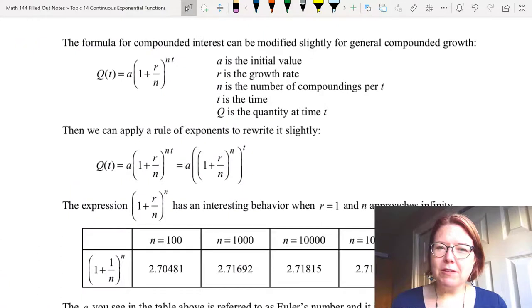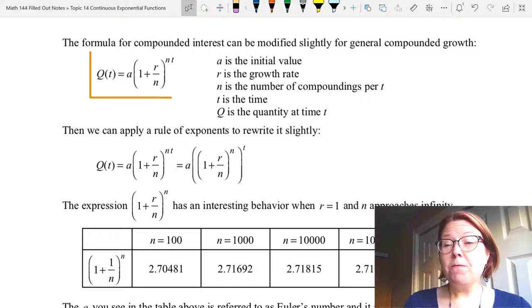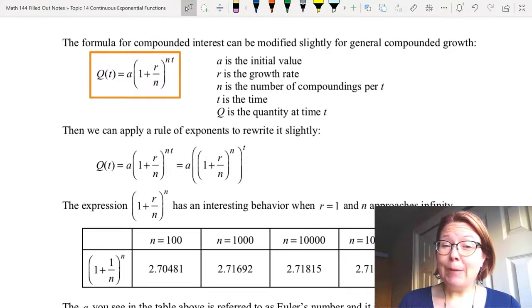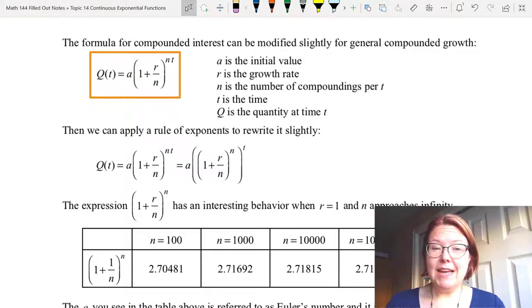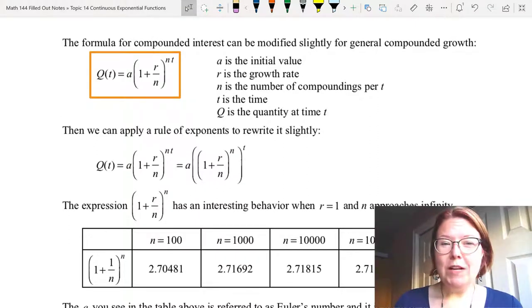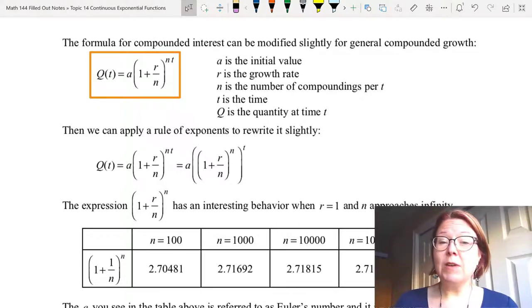We can actually take our formula for compounded interest and modify it slightly for general compounded growth. The formula would look something like this: Capital Q of lowercase t equals lowercase a times (1 plus r over n) raised to the n times t power.